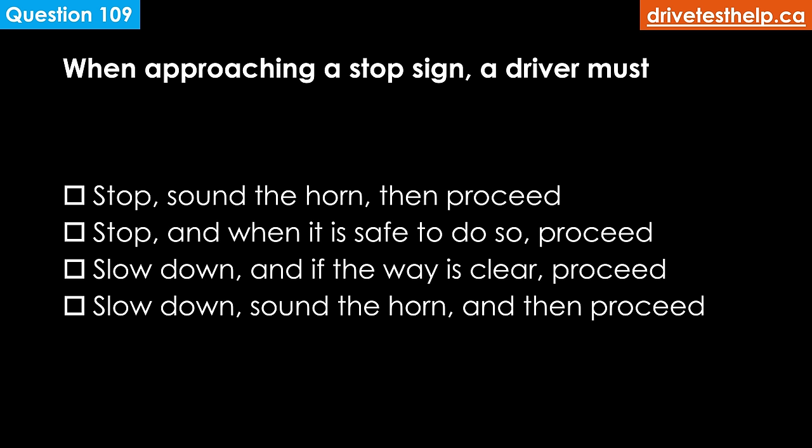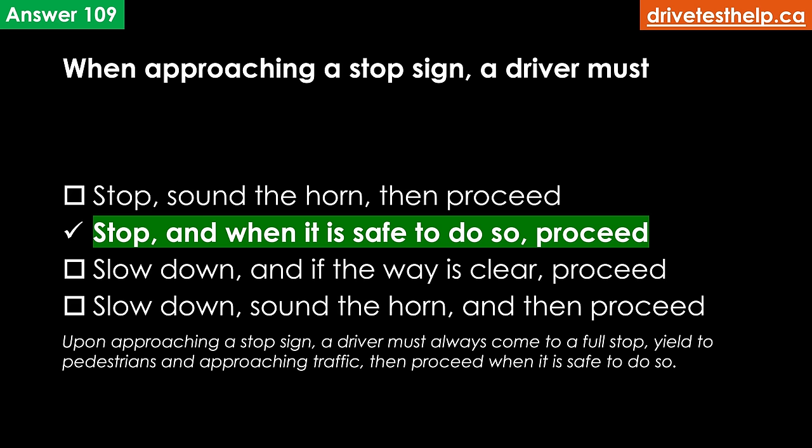Upon approaching a stop sign, a driver must: stop, sound the horn, then proceed; stop, and when it is safe to do so, proceed; slow down, and if the way is clear, proceed; slow down, sound the horn, and then proceed. The correct answer is stop, and when it is safe to do so, proceed. Upon approaching a stop sign, a driver must always come to a full stop, yield to pedestrians and approaching traffic, then proceed when it is safe to do so.